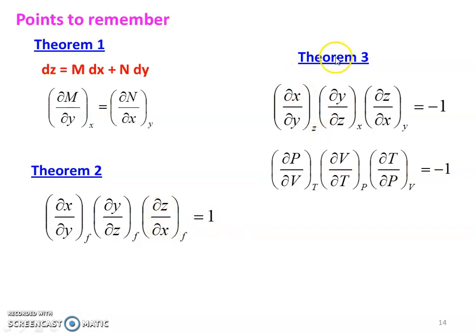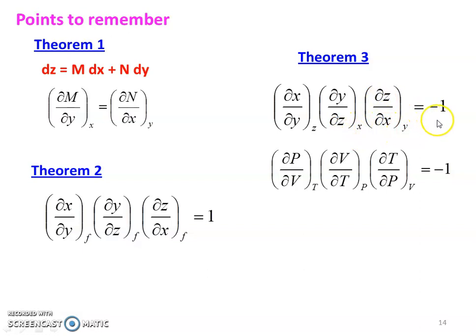Theorem number 3: when you have three variables, two variables will be in the form of differentiation with the third variable as a constant. So, dou x by dou y at constant z, multiplied by dou y by dou z at constant x, multiplied by dou z by dou x at constant y, equal to minus 1.